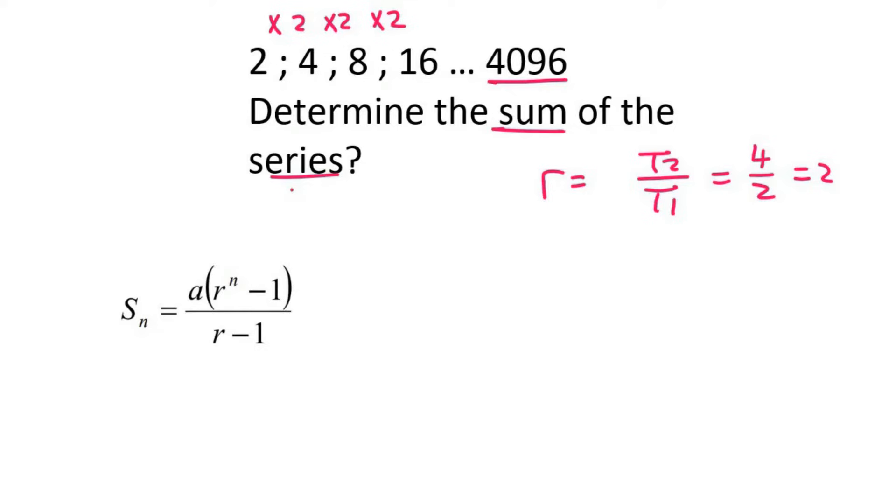So we can use the TN formula, and we could put the last term as 4096. Then a is 2, your common ratio is 2, and then we don't know what n is.